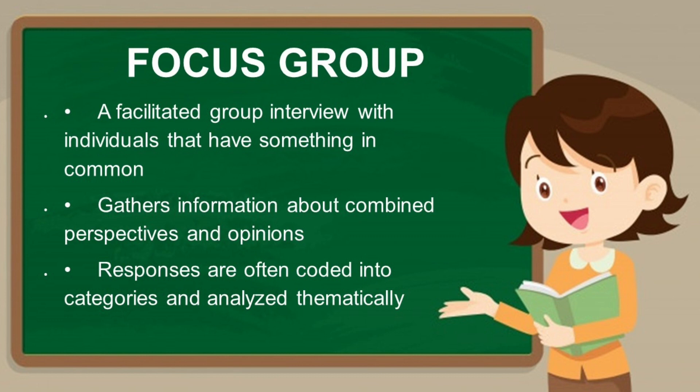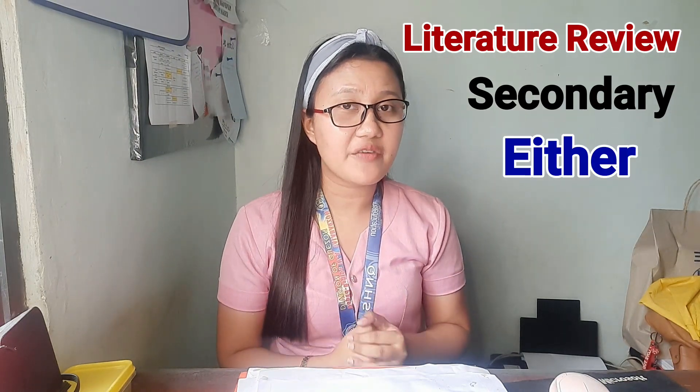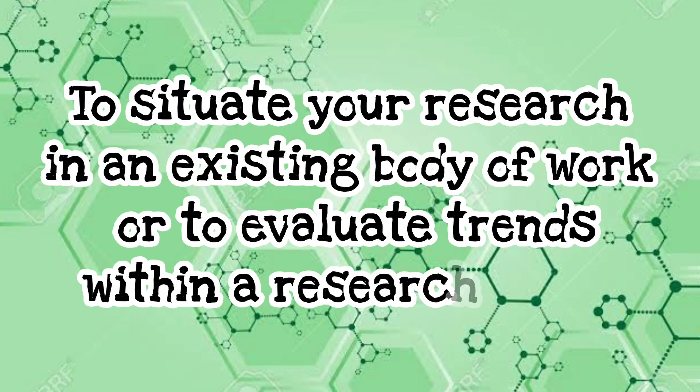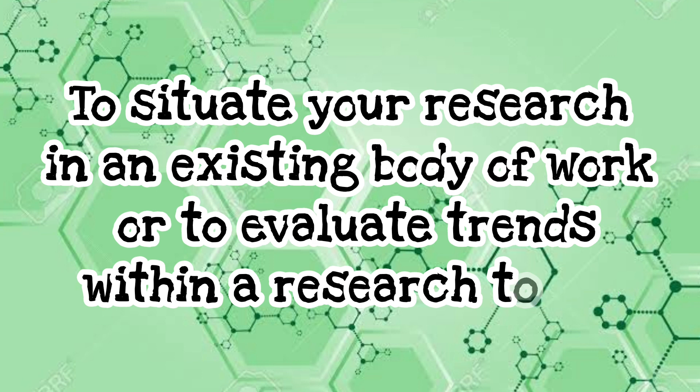We also have the literature review. It is secondary data and can be either quantitative or qualitative. The purpose of a literature review is to situate your research in an existing body of work or to evaluate trends within a research topic. Usually, you read previous researches, and from the literature in Chapter 2 you can gather various data. Since that data does not come from you, it is considered secondary data — you get the information from another source or person.